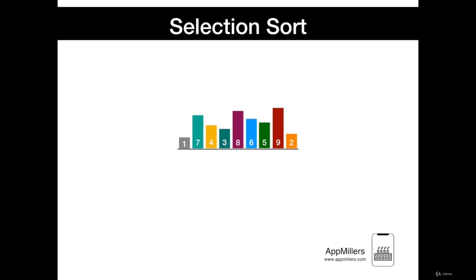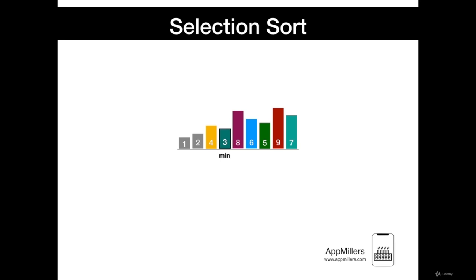If the smallest value happens to be in the leftmost position, no operation is carried out. Then the same operations are repeated until all numbers are fully sorted. We continue to do the linear search and find that 2 is the minimum number in the remaining sequence. We swap 2 with 7, and 2 is considered fully sorted. Then we do the same operation for the rest of the sequence, and we swap 3 with 4, which is in the leftmost position.